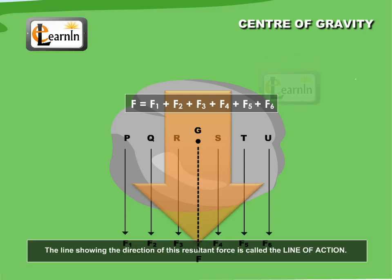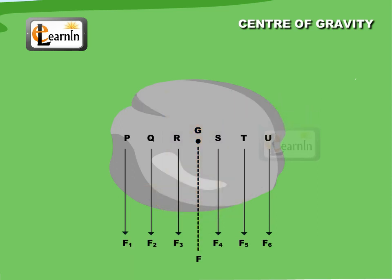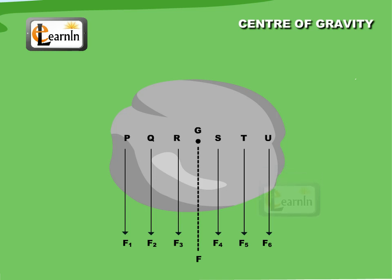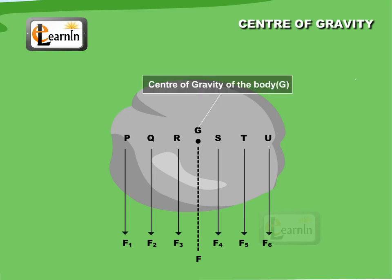The line showing the direction of this resultant force is called the line of action. This total force, or weight of the body, appears to act through the fixed point G, irrespective of the position or orientation of the body. This point G is called the center of gravity of the body.